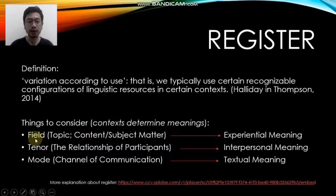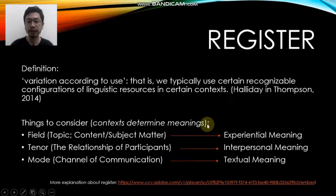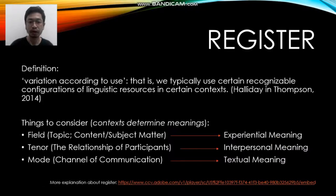The first aspect is field. Field is the topic, the content, or the subject matter of the text or language that we use. Field is related to the experiential meaning. So when we try to study the topic or the content or the subject matter of the language, we are trying to see the experiential meaning.